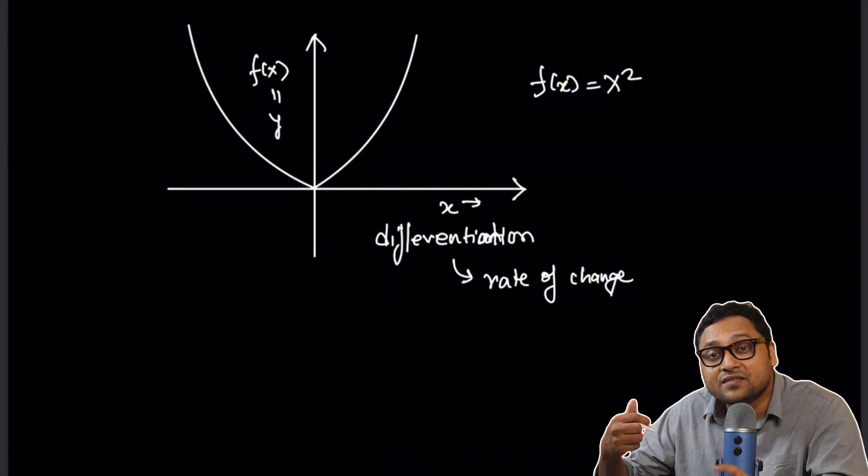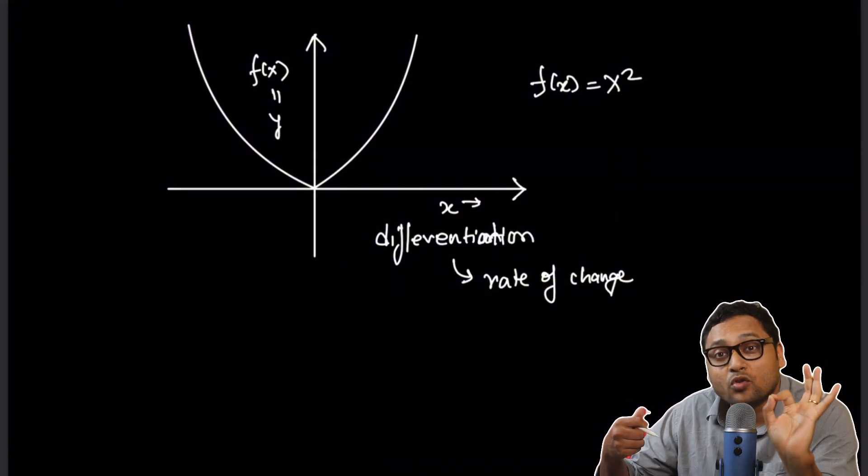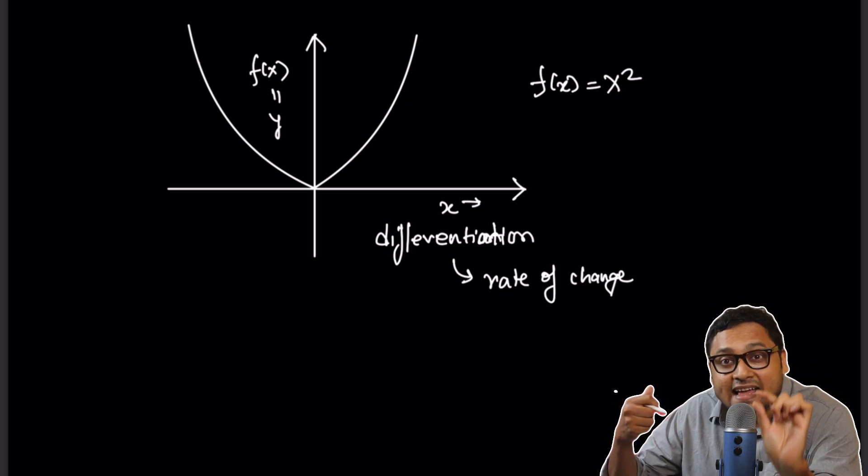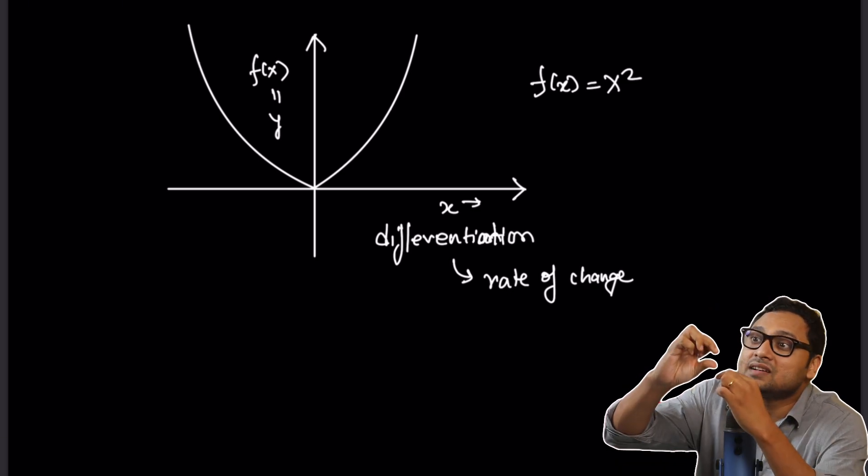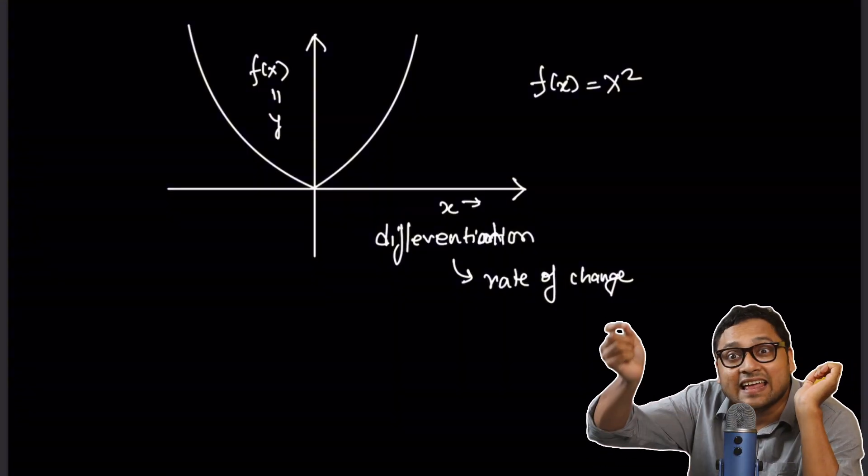That is the first level of understanding of a derivative. The second level of understanding is this, that the derivative gives you a tangent vector at a particular point on a curve. And then you can add up the tangent vectors to find the entire length of the curve.